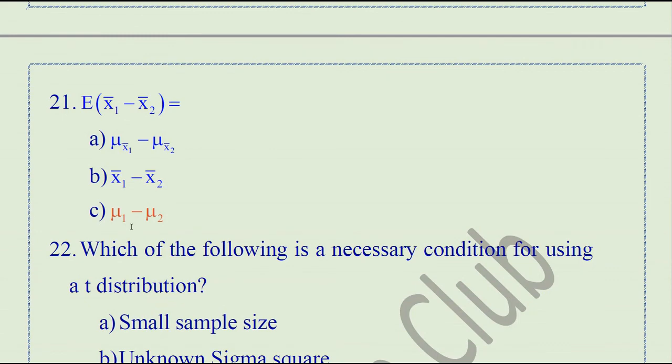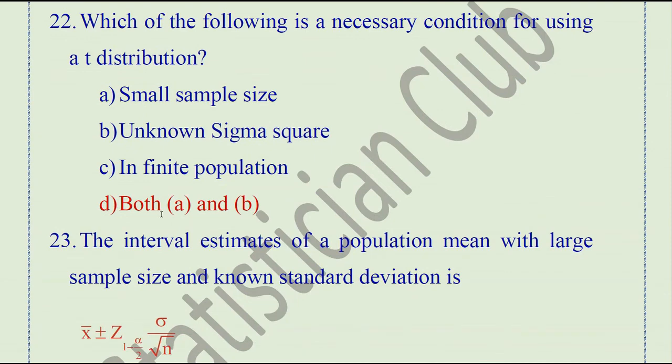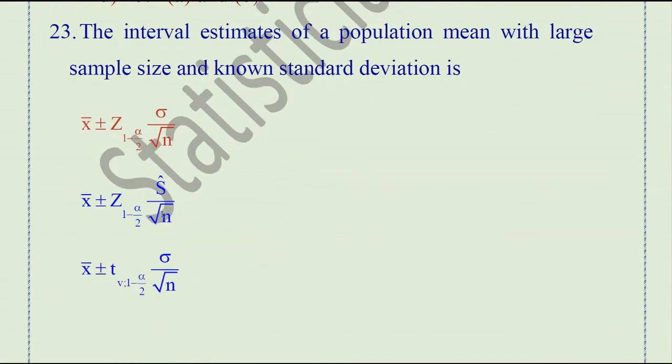The expected value of x1-bar minus x2-bar is equal to mu1 minus mu2. A necessary condition for using a t-distribution is a small sample size with unknown sigma square. The interval estimate of a population mean with large sample size and known standard deviation is x-bar plus or minus z sub (1 minus alpha over 2) times sigma over root n.